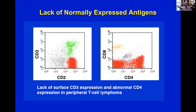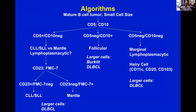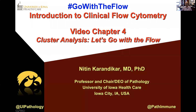Tumors usually do a combination of these five things. Once you have determined that a tumor exists, you can go down certain algorithms. Unfortunately there are a lot of wrong algorithms floating around the internet, so here is a relatively easy one to remember.